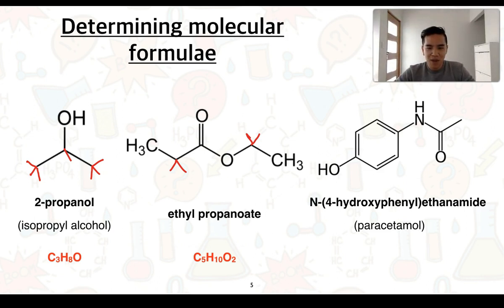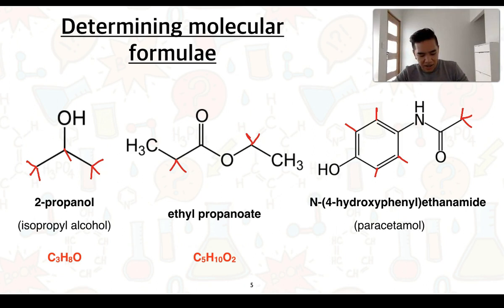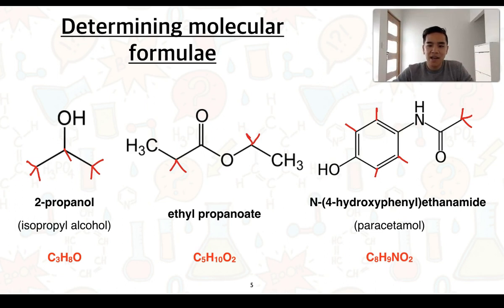The final molecule on the right is paracetamol. Let's start by counting the carbons — there are six within the benzene ring, called a phenyl group, then another two, giving us eight carbons. Filling in the remaining bonds, keeping in mind that carbon must form four covalent bonds, gives us nine hydrogens. There is one nitrogen and two oxygens. So paracetamol's molecular formula is C8H9NO2.